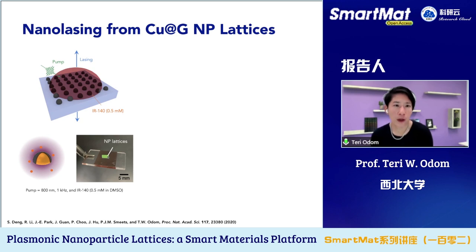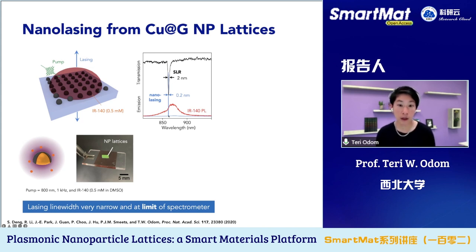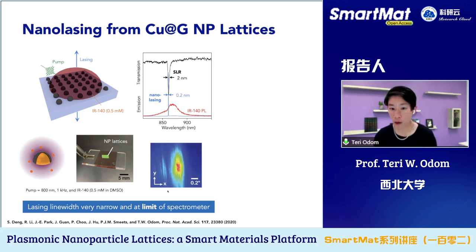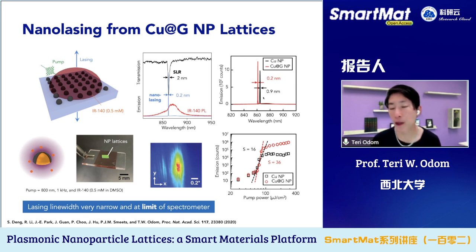Testing with graphene-coated copper nanoparticles, the SLR wavelength is very narrow — about 2 nanometers. Overlapping with the photoluminescence of the gain bandwidth, the nanolasing signal is about 0.2 nanometers, likely much less than this — limited only by our spectrometer resolution. We see really nice lasing emission with distinct beams. There are clear advantages from improving the quality of the building block: approximately five times narrower lasing linewidth and increased nonlinearity in the properties.